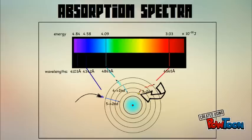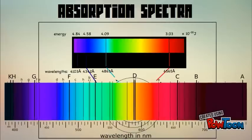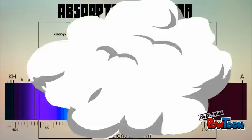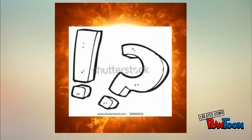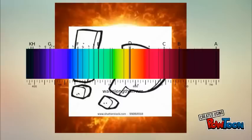the extra energy is given off in the form of spectral lines. When light comes from the Sun, we expected it to contain all the colors, but there were a couple of wavelengths missing.